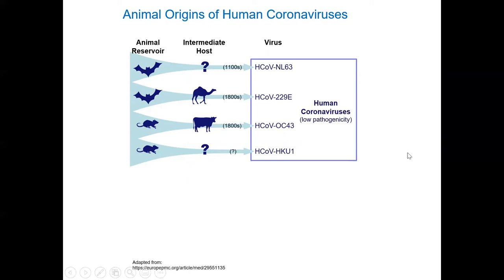All these viruses crossed over to humans - we're not exactly sure when. They originated in bats and rats, and usually they might go through an intermediate host as they adapt, because humans aren't usually in contact with bats. The intermediate host is sometimes important. Since the 1960s, we haven't really studied these a ton because they don't make us that sick, so the interest hasn't been too high.